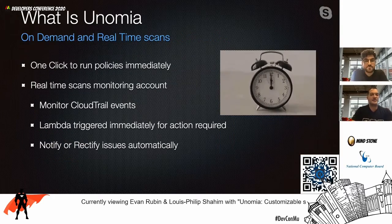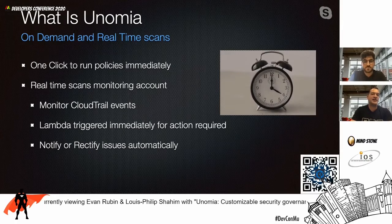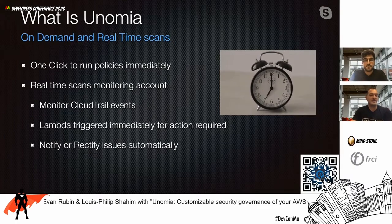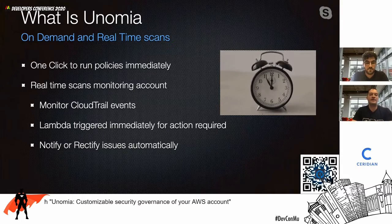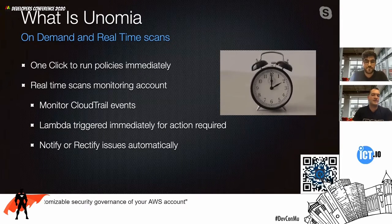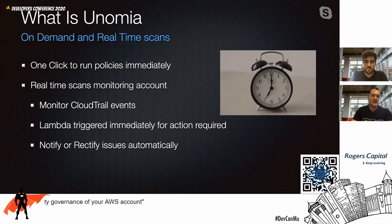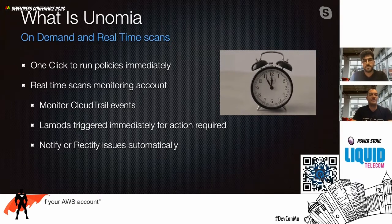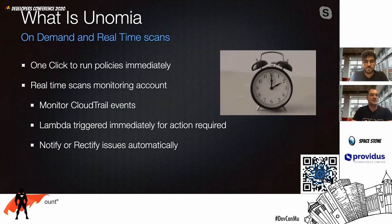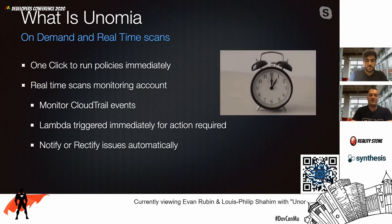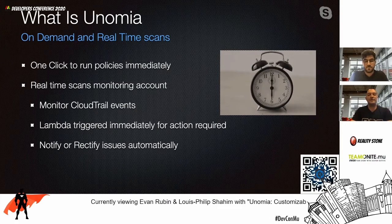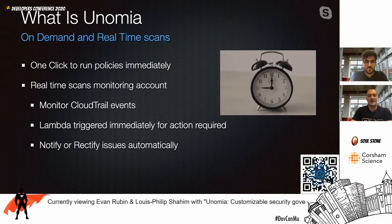We have daily automated checks run for all accounts at 8am GMT+2. With on-demand scans, you get the ability to run a scan on your accounts as required, multiple times daily on top of the automatic trigger. Our real-time scans are where the true power of this tool comes out — giving you real-time monitoring so that as soon as you spin up something bad, within seconds you can be notified of the finding, or even have Unomia remediate the misconfigured resource for you automatically. Unomia can also remove the resource from your account entirely upon detection.